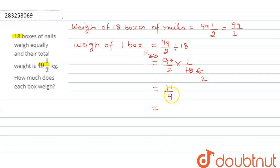11 ko 4 se divide karenge. 2 and 3/4. That means each box's weight will be 2 and 3/4 kg.